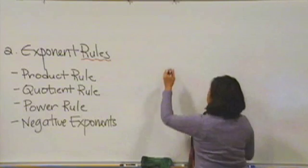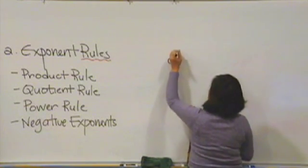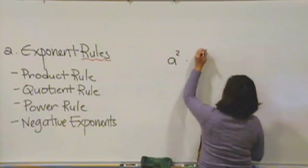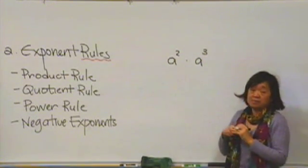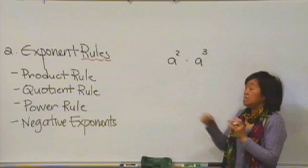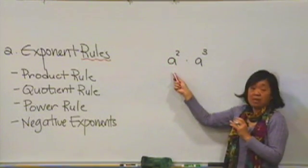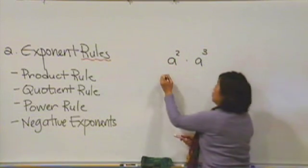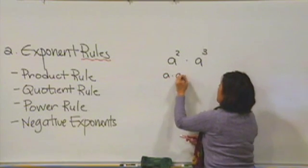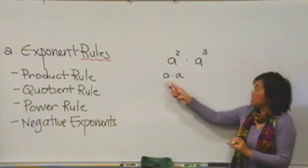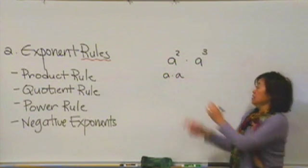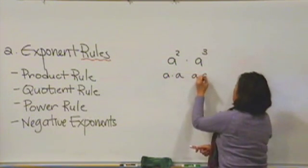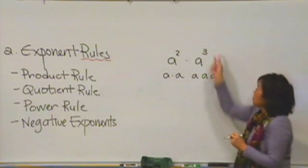For example, if you see something like this: a to the second times a to the third, a product. What does that mean? When we write a to the second power, what we're really saying is there are two a's being multiplied together. But instead of writing it out like this, we're just going to abbreviate it. This one means that instead of three a's, we're just going to write it like this.